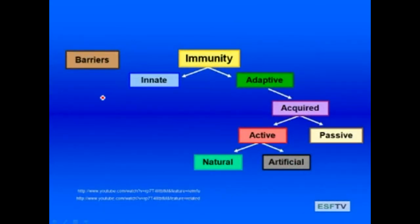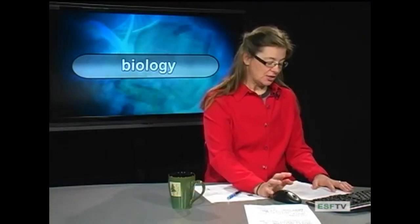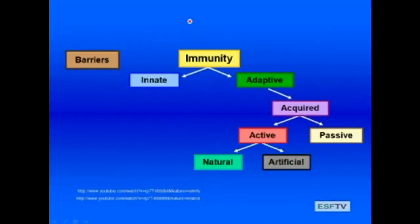Protection against invaders can be via barriers, and we'll talk about some of the barriers that our body has against invaders, as well as through our immune system. Immunity is the ability of our body to recognize and protect against non-self invaders. This immune system is dispersed throughout our body, and it is crucial to survival, as crucial as many of our other major body systems.